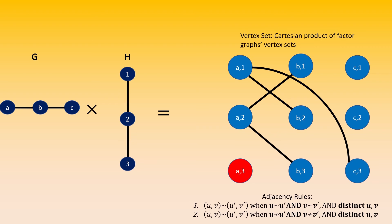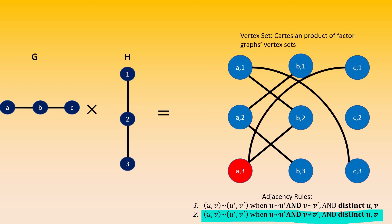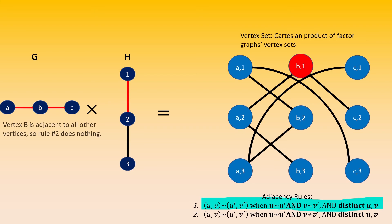We can move on to A3 now, going a little quicker. By the first rule, vertex A3 is adjacent to vertex B2, as vertex B is adjacent to vertex A, and vertex 2 is adjacent to vertex 3. By the second rule, A3 is adjacent to C1, as C is not adjacent to A in graph G, and 3 is not adjacent to 1 in graph H. On to B1. By the first rule, B1 is adjacent to A2 and C2, as A and C are adjacent to B in graph G, and 2 is adjacent to 1 in graph H. The second rule does not produce any adjacencies for B1, because in the left graph G, vertex B is adjacent to every other vertex.